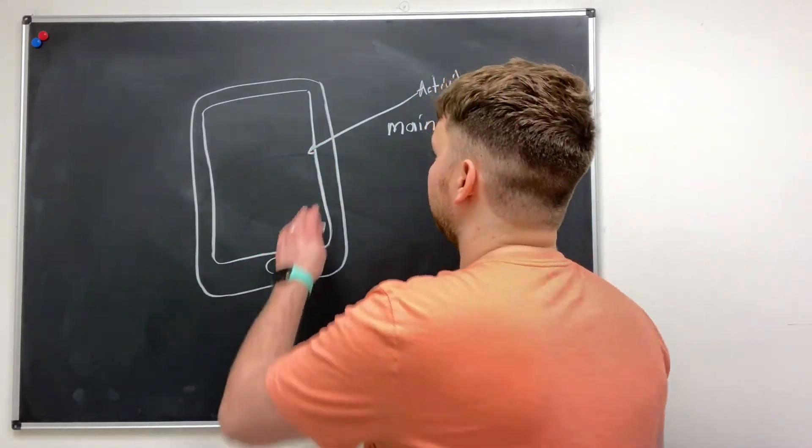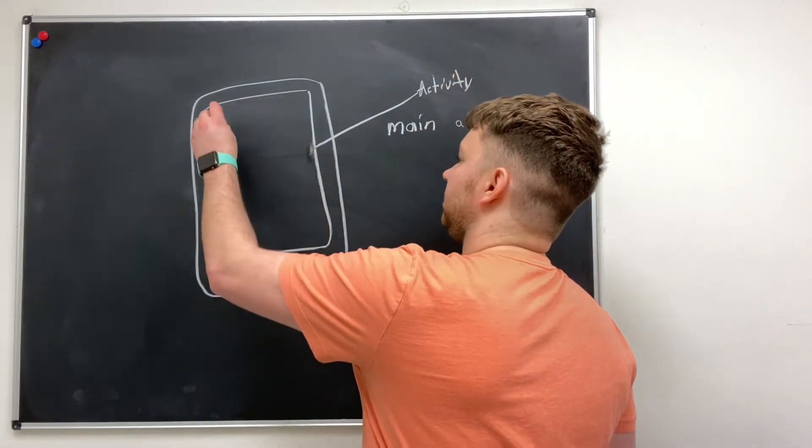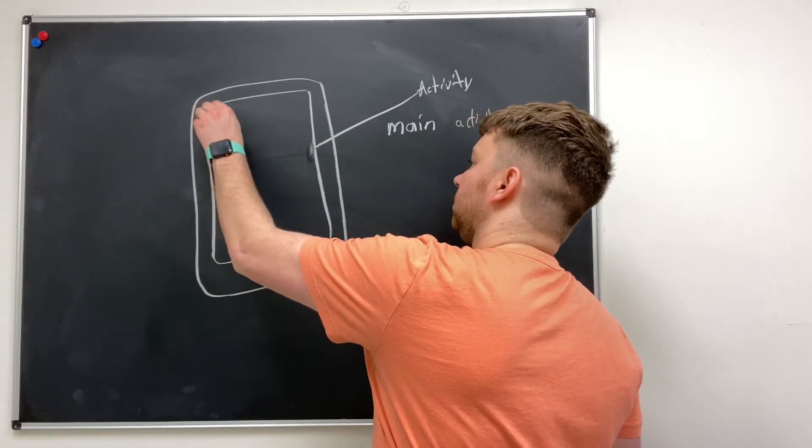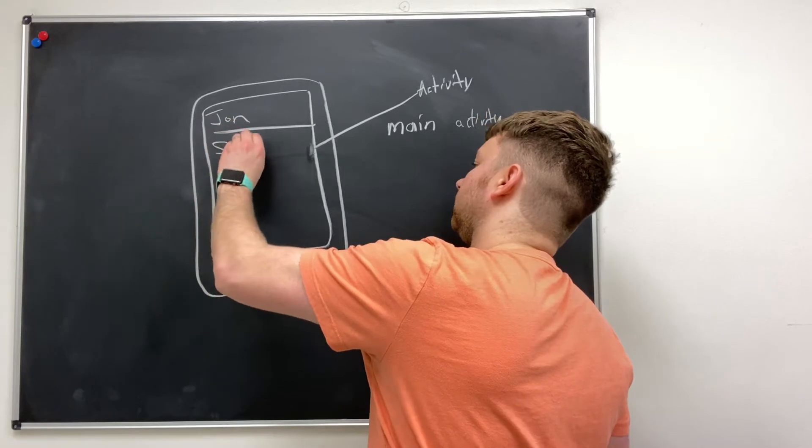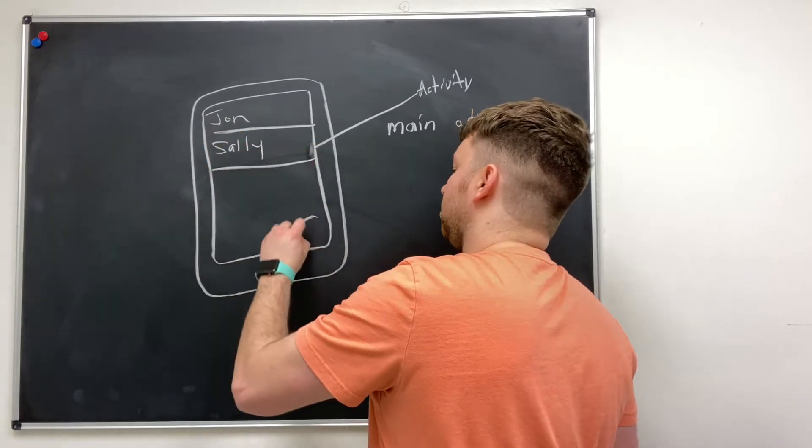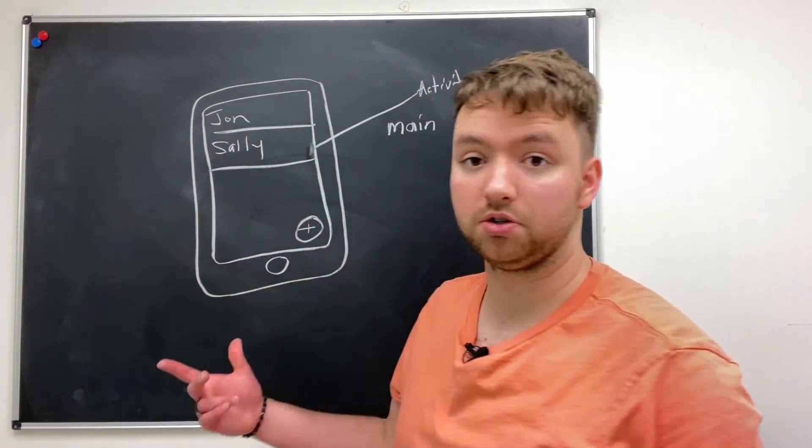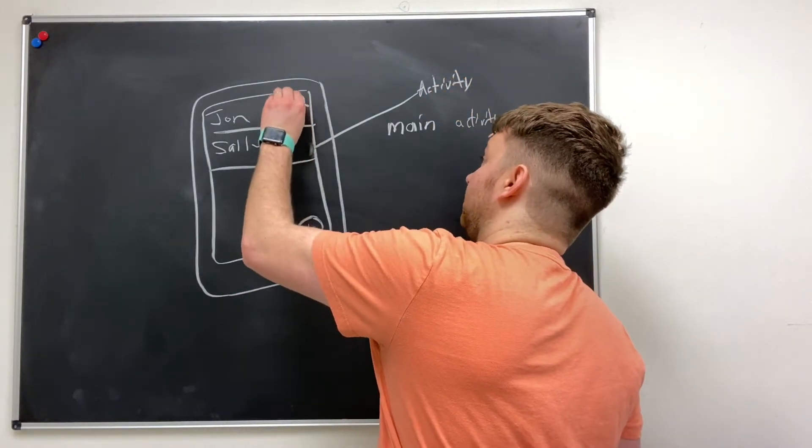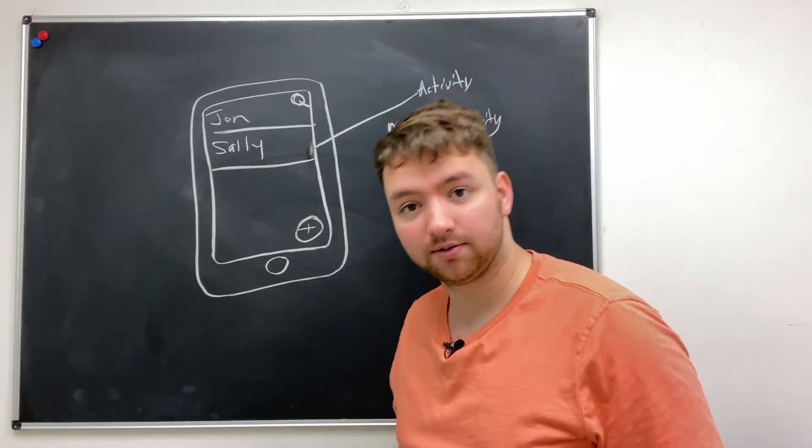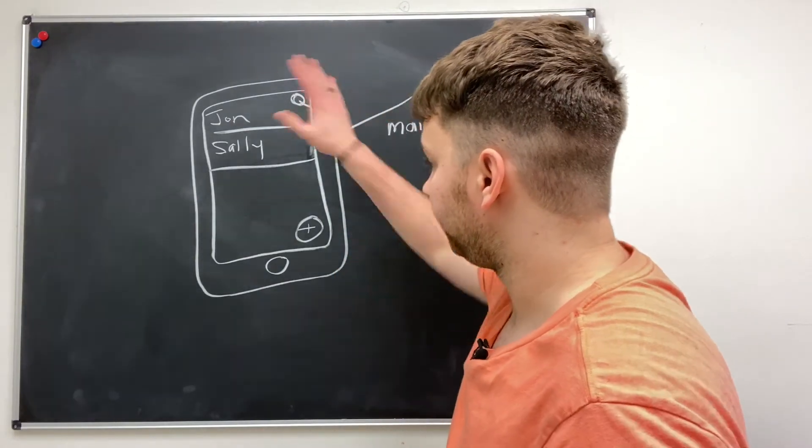So let's say we're in the context of an email application. Well what kind of stuff would be on our main activity? I imagine we probably have a series of emails on here from people right here like so. And you know we might have a little plus button to compose a new email, we might have a little search, and that is a magnifying glass if you can't tell.